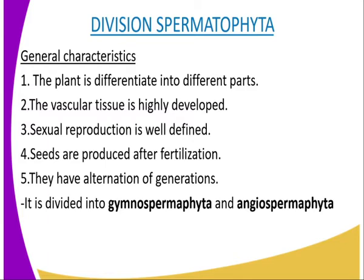The second characteristic is that the vascular tissue is highly developed, with xylem tissues consisting of both the xylem vessels and the tracheids. Another characteristic is that sexual reproduction is well defined — fertilization is preceded by growth of a pollen tube and does not depend on water like in other groups. Also, seeds are produced after fertilization.